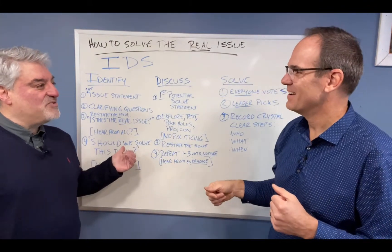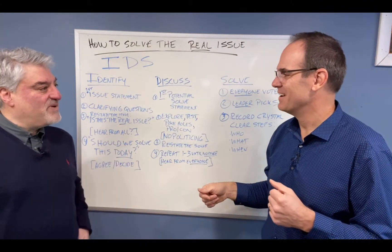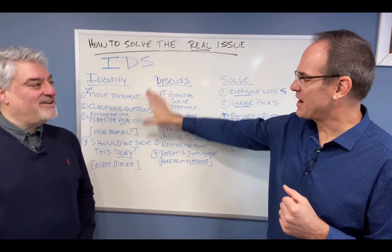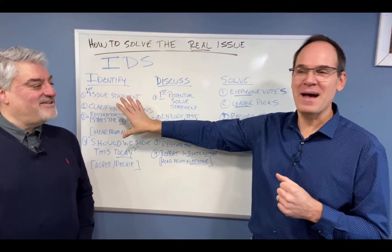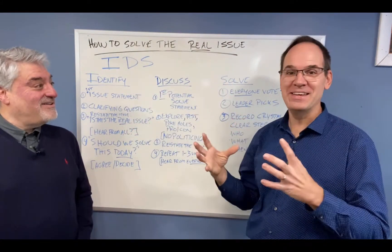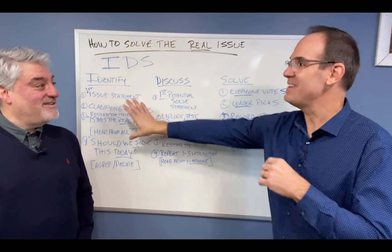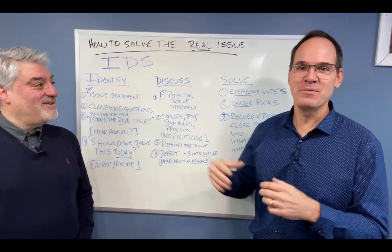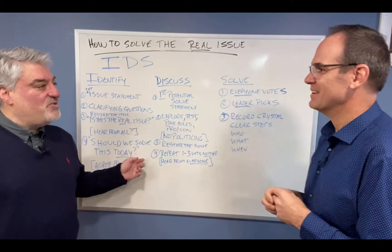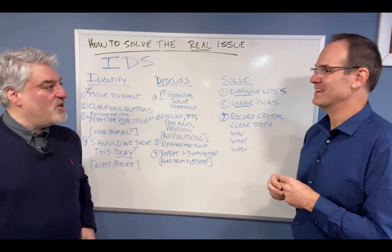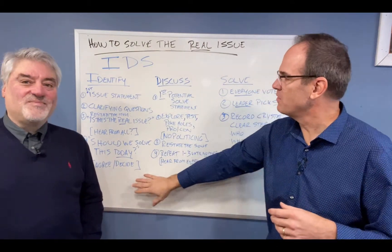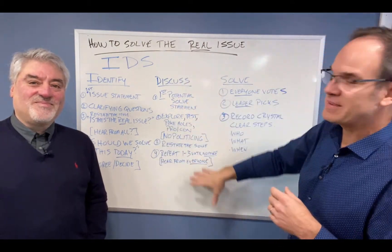How much time should people be spending on identifying? About 40% of your time that you give to solving an issue is in here — just identifying what the real issue is. And so once they do that, once they agree that that's an issue they want to solve, they'll go to Discuss.